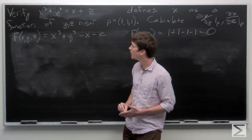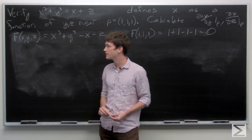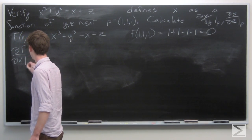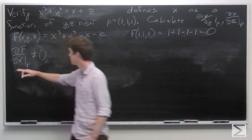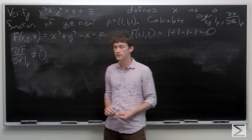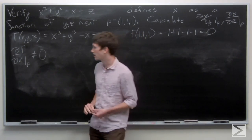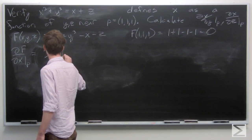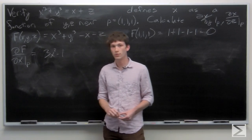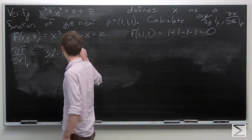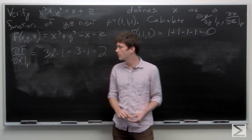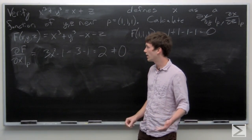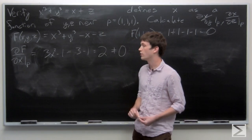Now we want to verify that f defines x as a function of y and z. We know that it does so if our partial derivative of f with respect to x at p is non-zero. So we go ahead and calculate the partial derivative of f with respect to x, and we get 3x squared minus 1. We evaluate that at p and we get 2, and clearly that's non-zero. So we know that f implicitly defines x as a function of y and z near our point p.